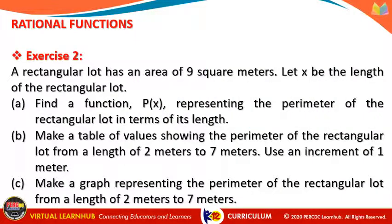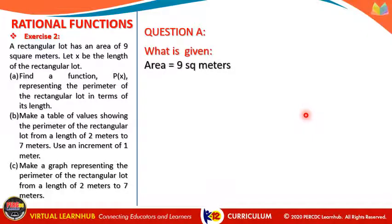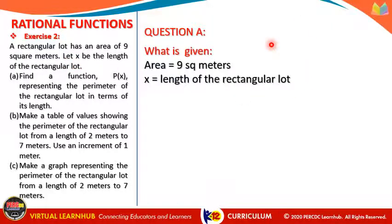Let's solve another one — exercise number two. A rectangular lot has an area of 9 square meters. Let X be the length of the rectangular lot. Letter A: find a function P(X) representing the perimeter of the rectangular lot in terms of its length. It is given that the area is 9 square meters and X is the length.